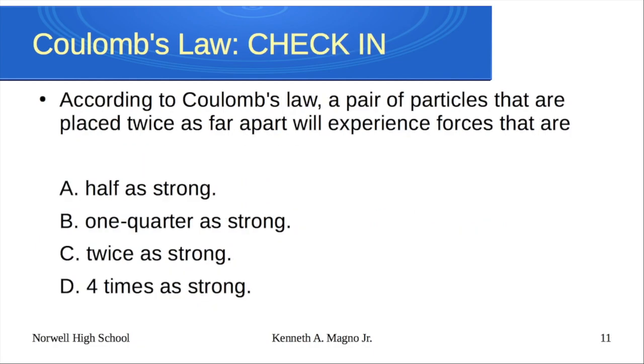So now, according to Coulomb's law, which again, just to remind you here, is that f is equal to kq1q2 over d squared. A pair of particles that are twice as far apart will experience a force that is half as strong, one quarter as strong, twice as strong, or four times as strong. It ends up being a quarter as strong, because it'll be 1 over 2 squared. So 1 over 2 squared is 1 over 4, so a quarter.